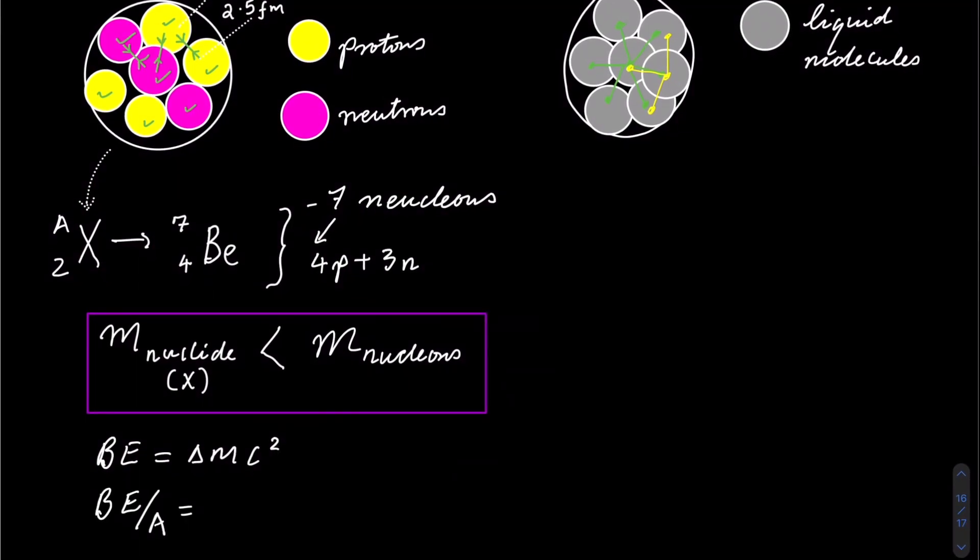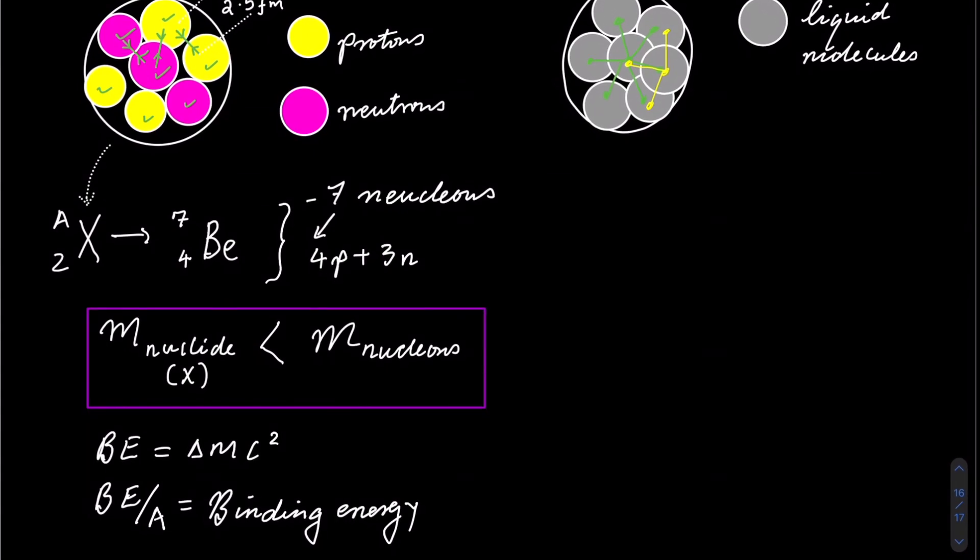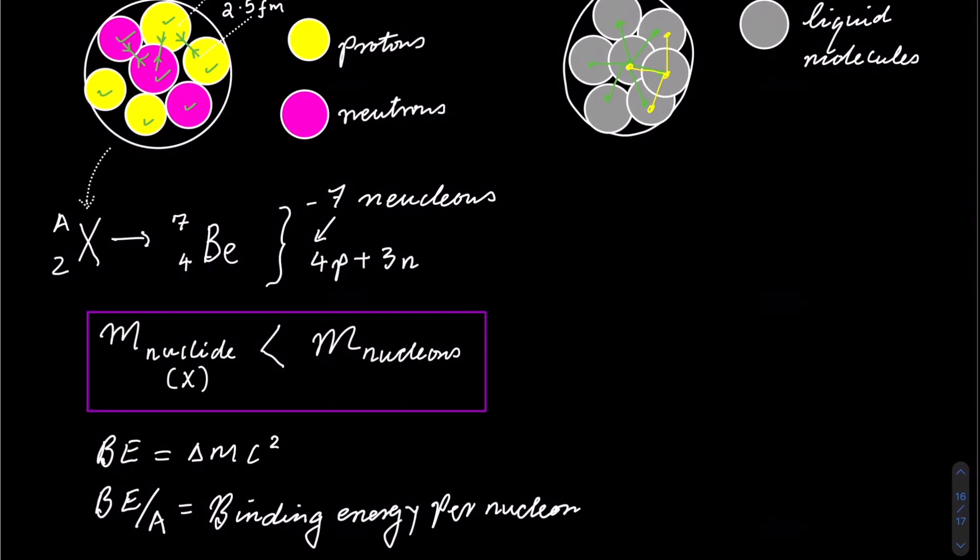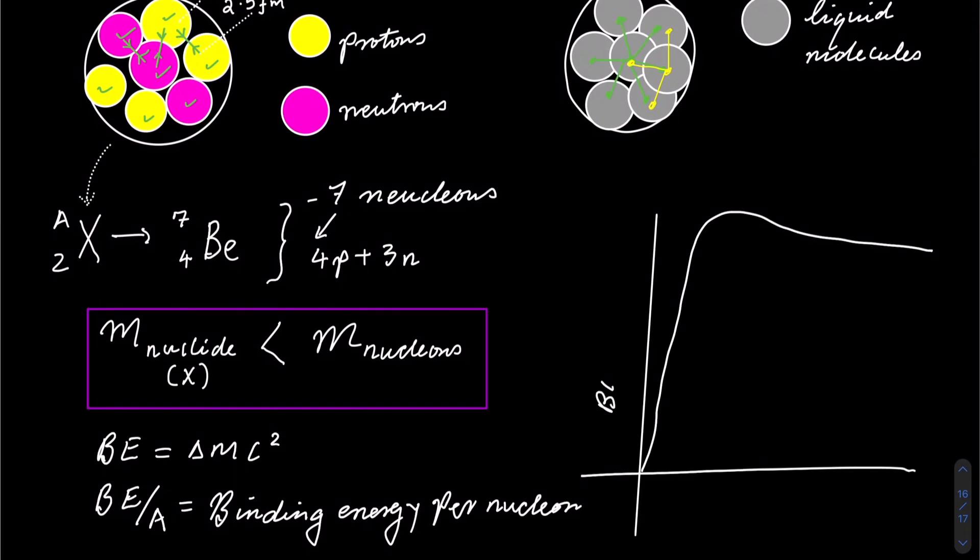Taking the total binding energy and dividing it by the number of nucleons, we get the binding energy per nucleon. When you plot binding energy per nucleon in mega-electron volts against the separation of nucleons in femtometers, you get a very steep positive slope that peaks somewhere around iron-56. It dips slightly but remains in the region of 8 mega-electron volts.